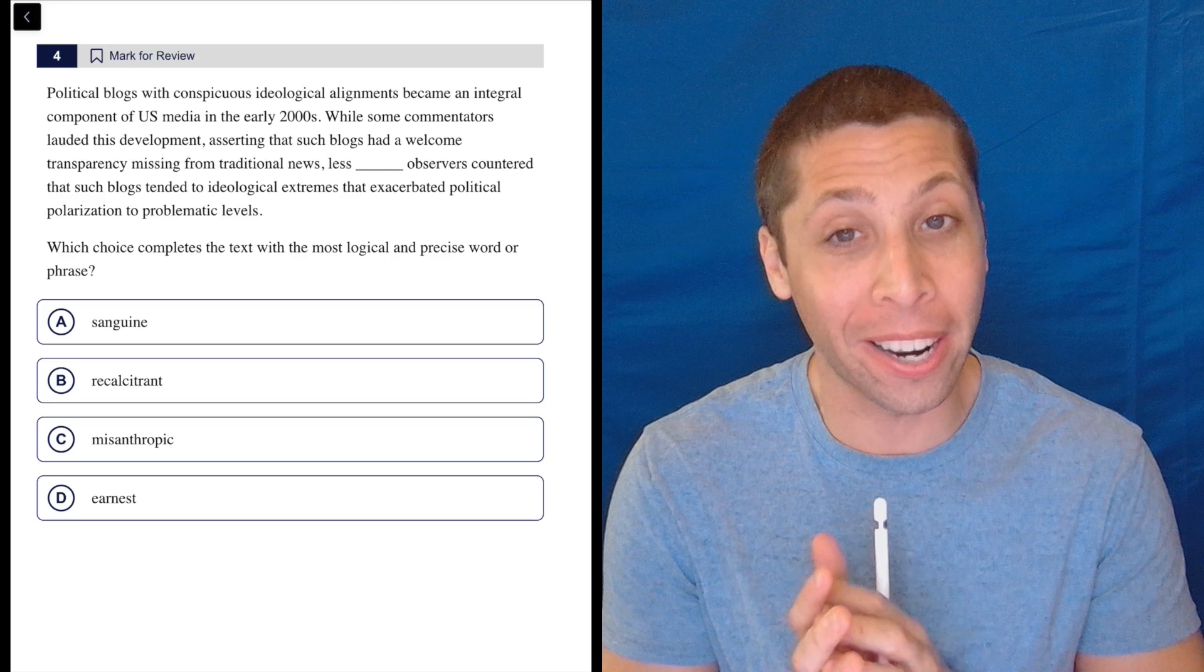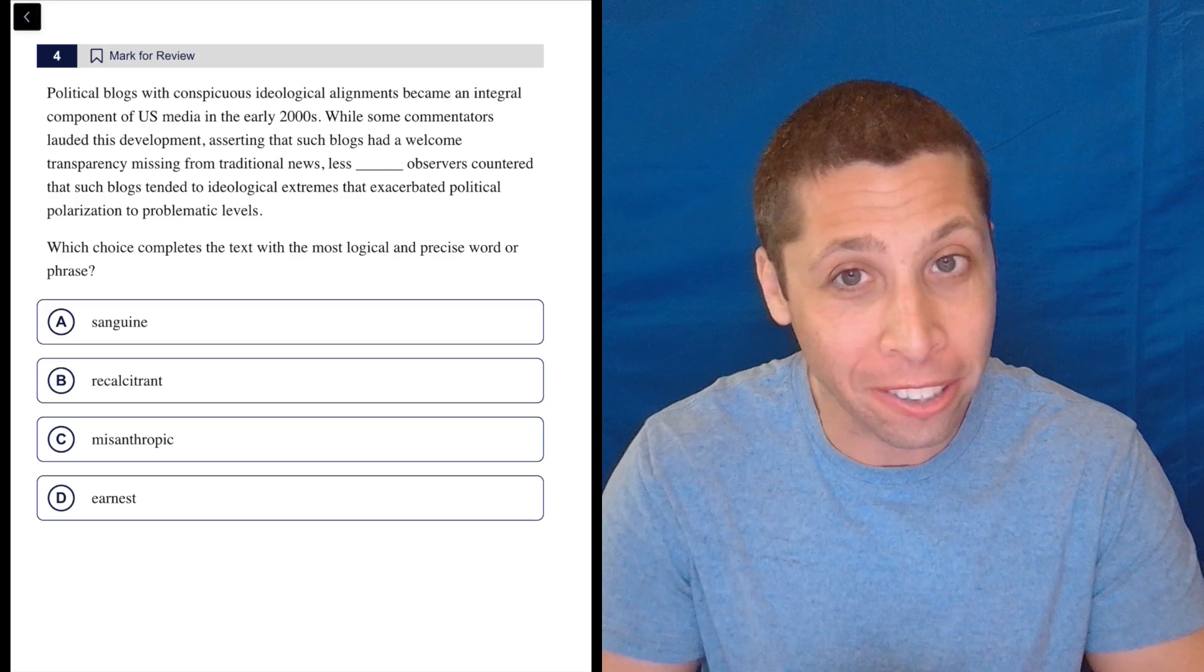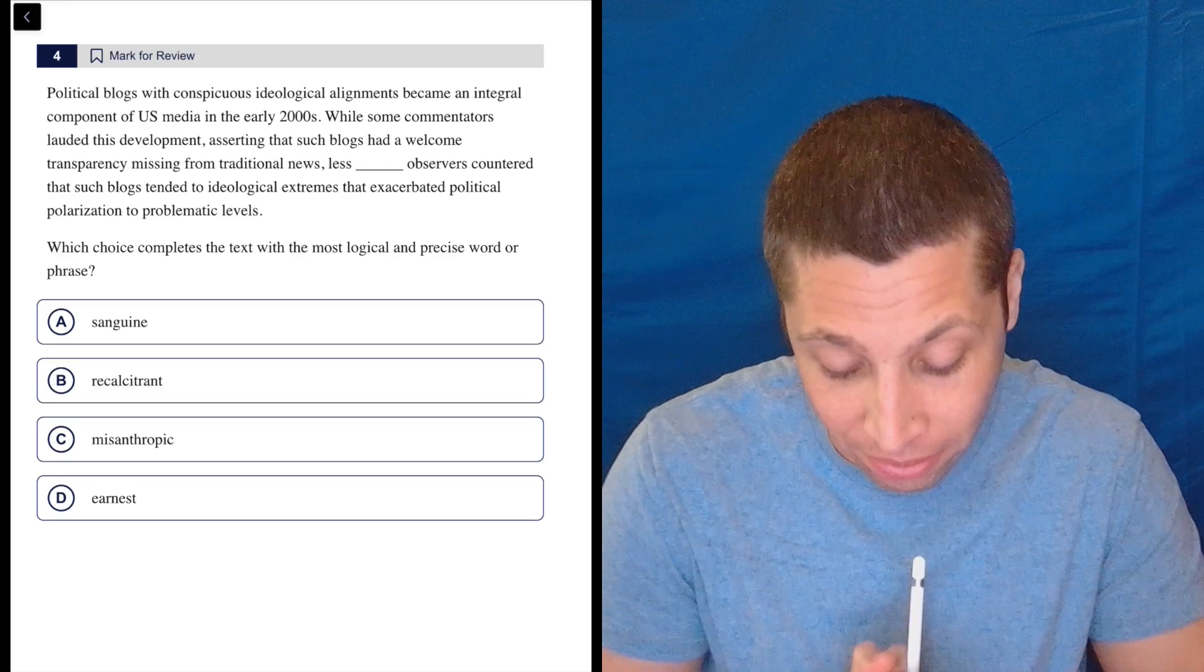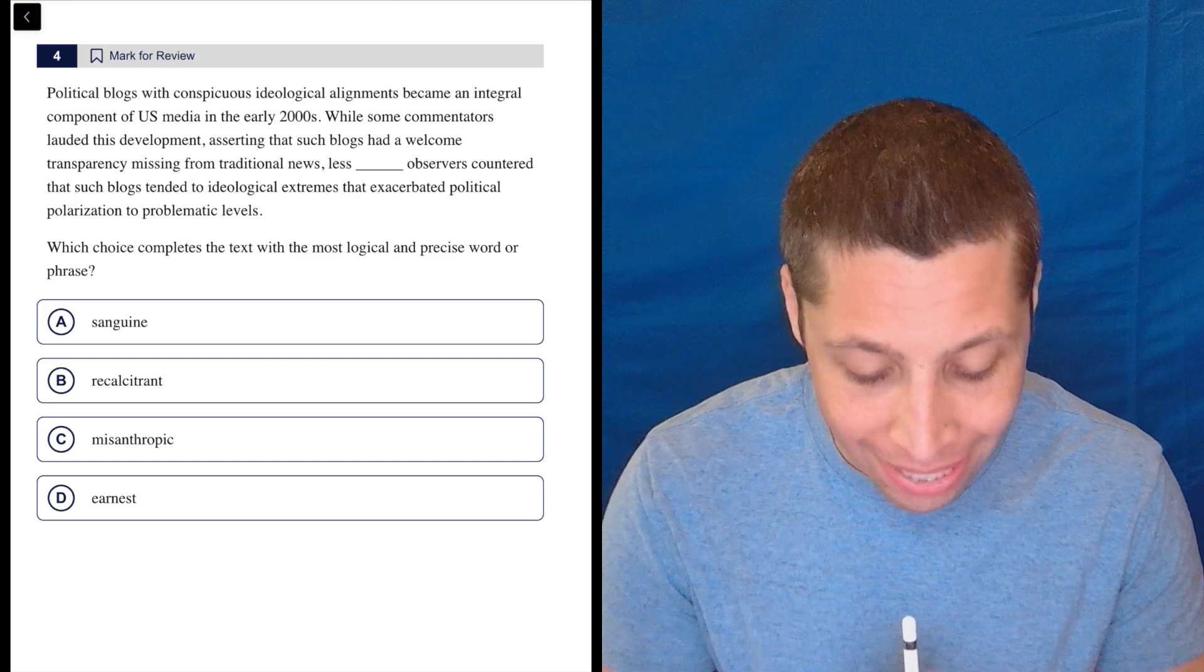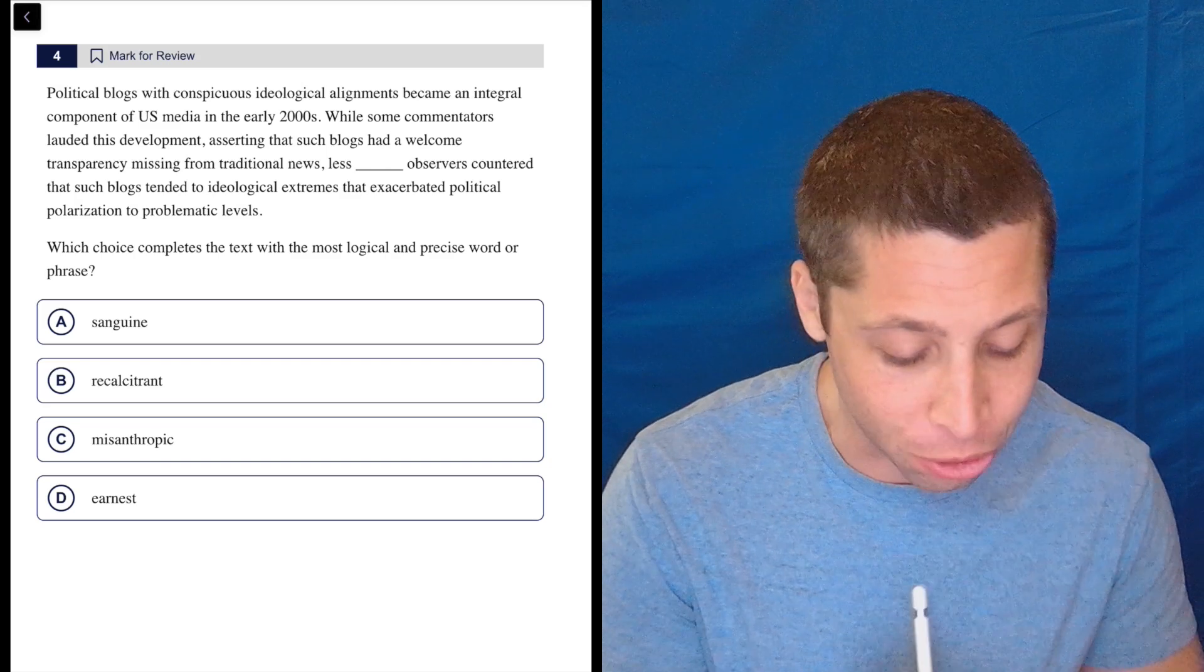But if you really want to get these vocab questions right, you're going to need to learn these words because this is obvious. This answer is obvious. Political blogs with conspicuous ideological alignments became an integral component of US media in the early 2000s.